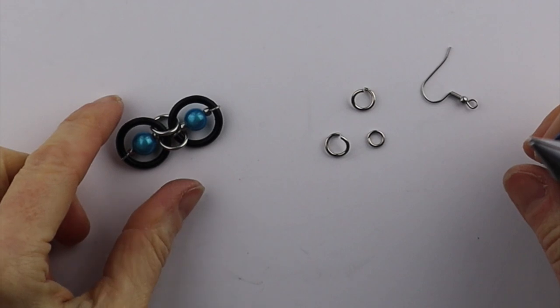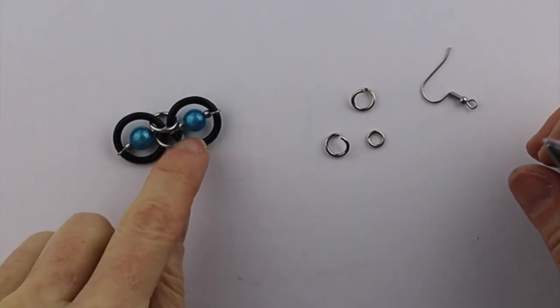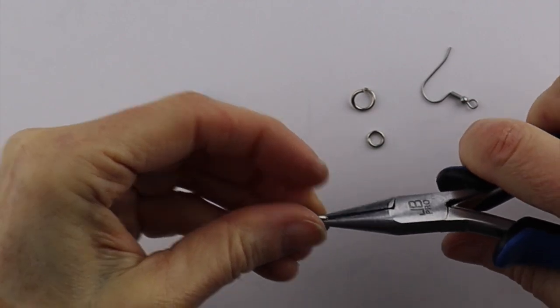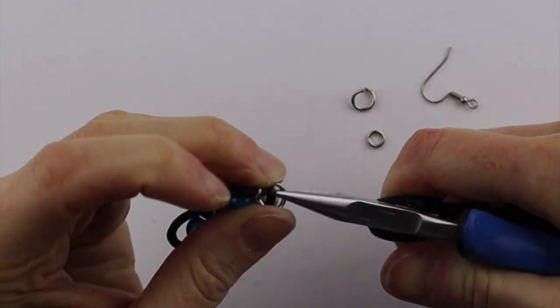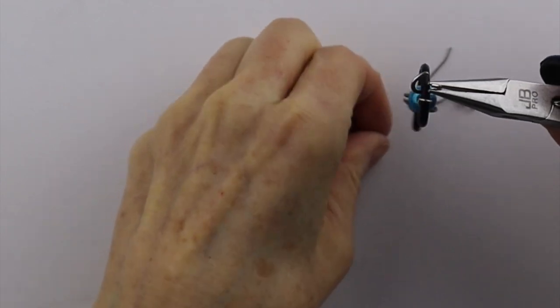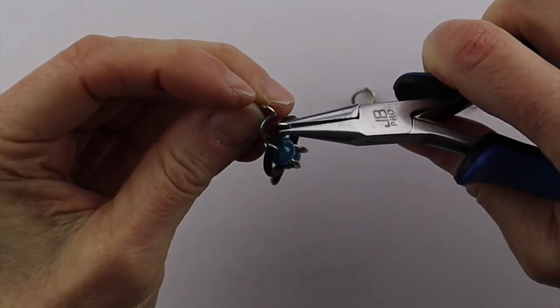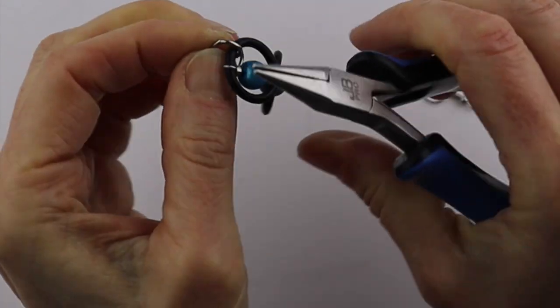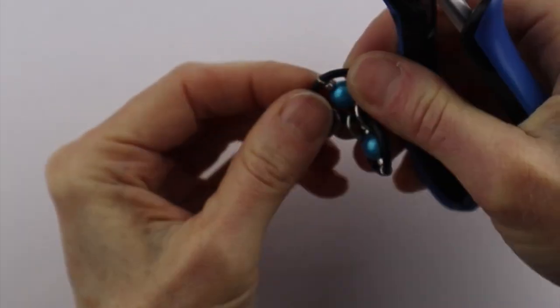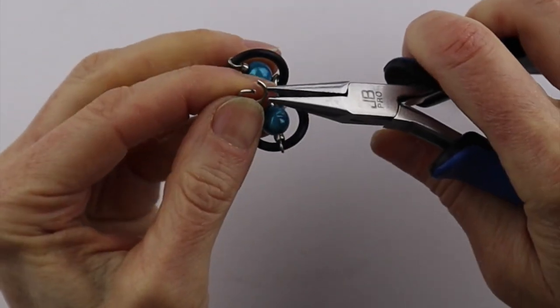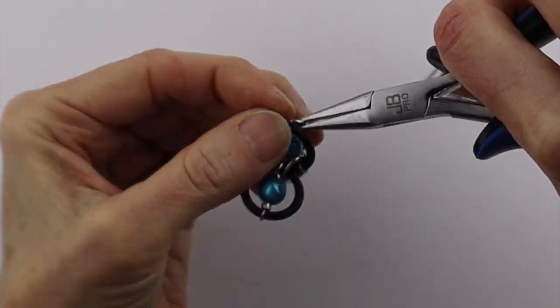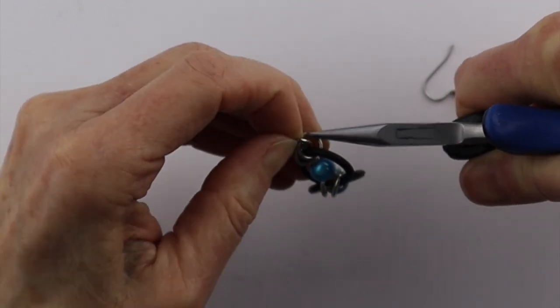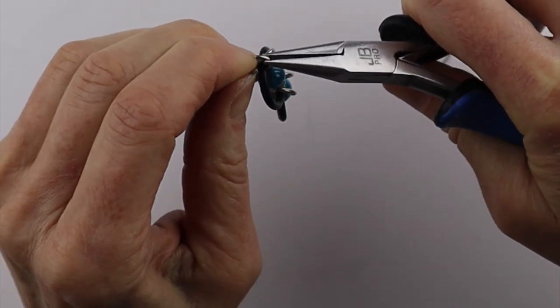If you do want to make matching earrings, you can put two or three of these pieces together, then get some jump rings. They could be slightly smaller. Put this at the top and then add another jump ring to that. Close that up and then put one to the other side of where the bead is. Hook it on, loop it into that same jump ring, and then close it up.